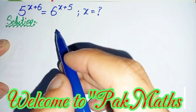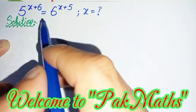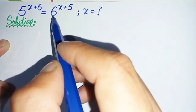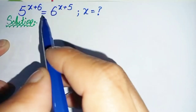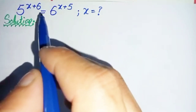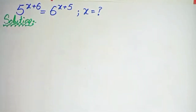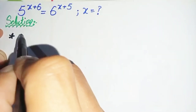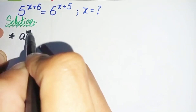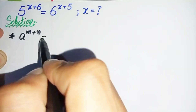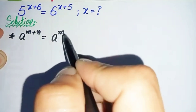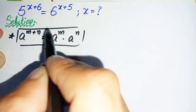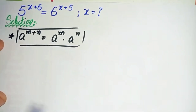Hi everyone, welcome to Parkmas. How to solve this interesting exponential equation: 5 raised to power x plus 6 is equal to 6 raised to power x plus 5. Here, on both sides of this equation, we will use an exponential math property to split the power over the bases. The property is: a raised to power m plus n can also be written as a raised to power m times a raised to power n.